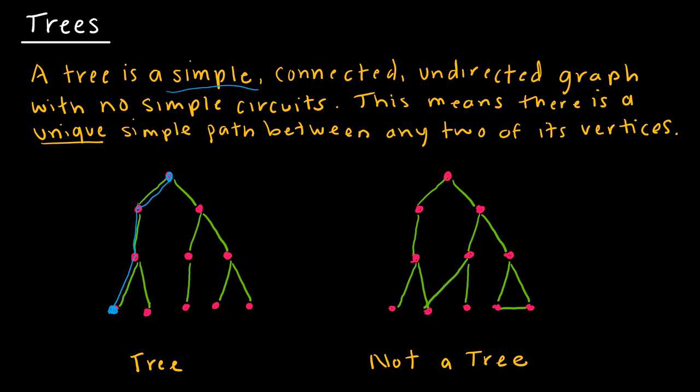I have an example of a tree and a non-tree. The first problem is a circuit — a cycle where I can get from one vertex back to itself, and that's not allowed. The second problem is having two different paths to reach the same vertex; we should only have one path from vertex to vertex.